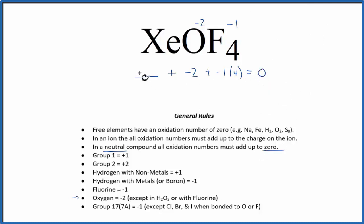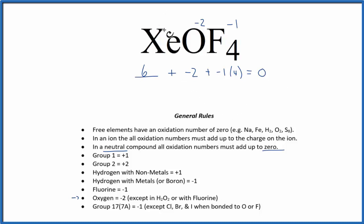So now we just need to figure out what plus minus two and minus four equals zero. Positive six — that would make this a true statement. So the oxidation number on the xenon in XeOF4 is plus six.